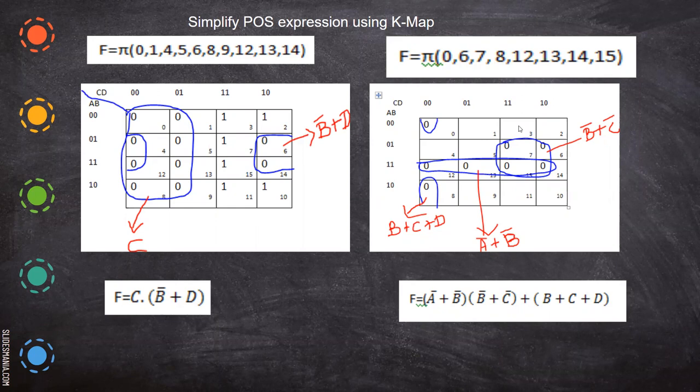Now we are going to see how to simplify the product of some expression using K-map. So far what we have seen is SOP. Now we will see POS. SOP is simple — you have many min terms, you draw ones in your K-map and form pairs and quads. In POS, it is the reverse: you check for zeros and form pairs and quads. All other processes are the same, but you have to write it as max terms, not min terms.